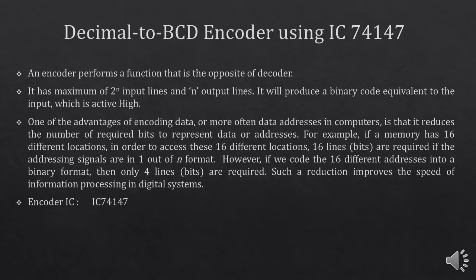For example, if a memory has 16 different locations, in order to access these 16 locations, you need to have 16 lines or bits. So by using an encoder, you can reduce these 16 lines or addresses to only 4 lines. Such reduction improves the speed of information processing in digital systems. You are going to use IC 74147 for the encoding purpose.